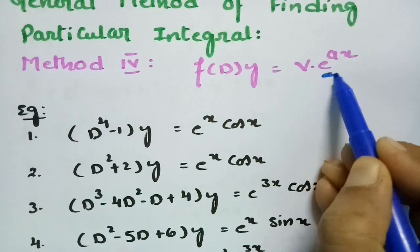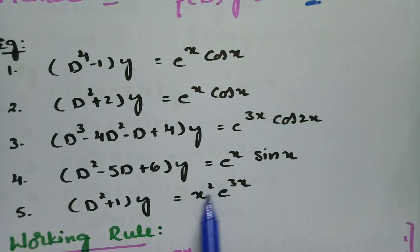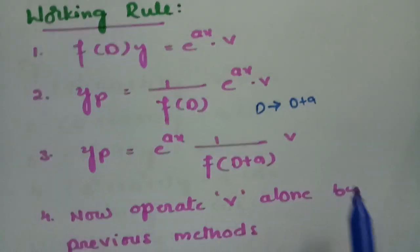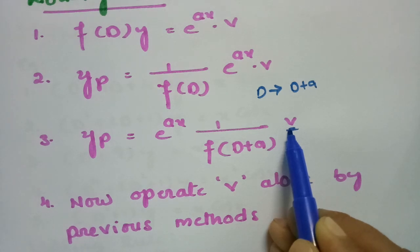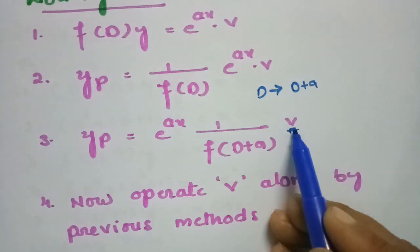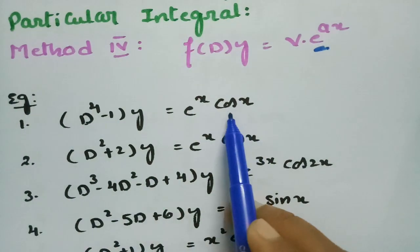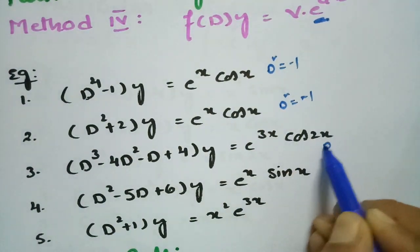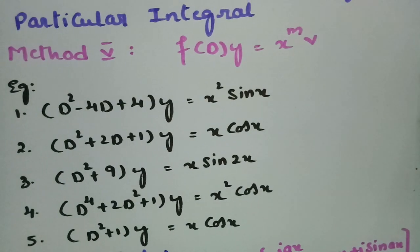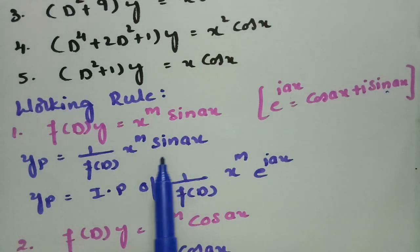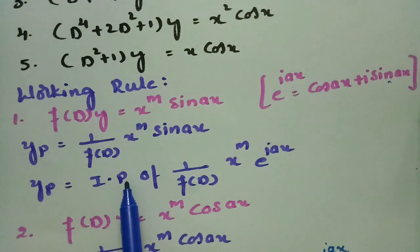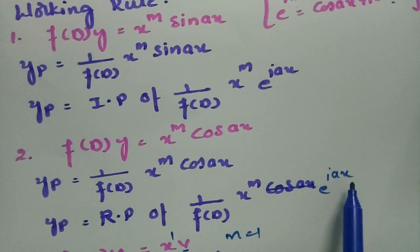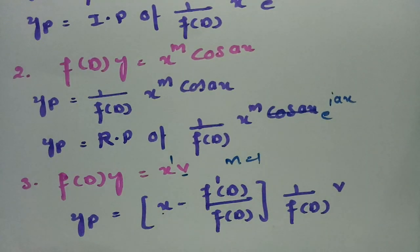Method 4 — combination of e^(ax)·v: identify e^(ax) multiplied by some v, bring e^(ax) aside by writing D + a in place of D, then use one of the first three methods on v depending on its type — trigonometric gives D² = −1, or −4, etc. Method 5 — x^m · v: if m > 1 with sine, use imaginary part of e^(iax); if cosine, use real part; if m = 1, use the xv formula.